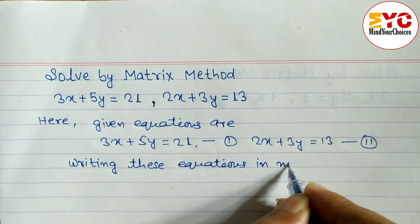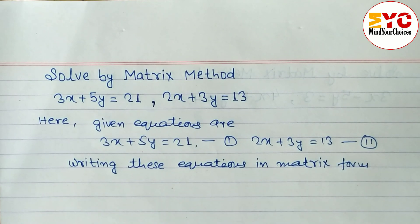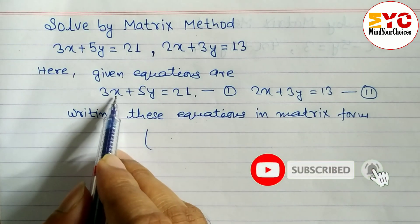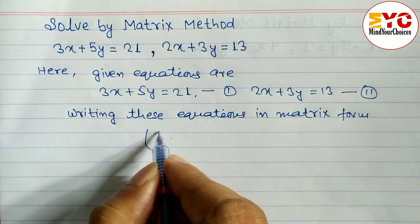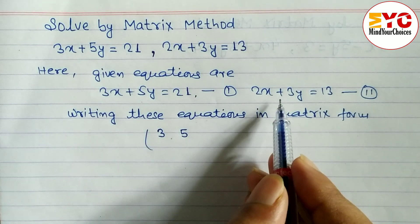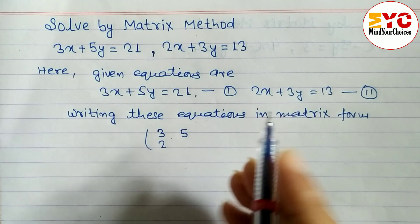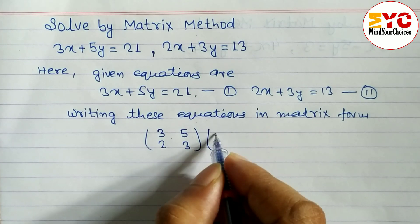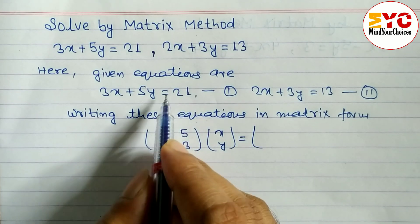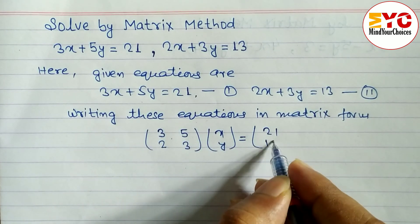To write the equations in matrix form, look at how to do it. The coefficient of x is 3, so we write 3; the coefficient of y is 5, so we write 5. For the second equation, coefficient of x is 2 and y is 3. Then we write x and y as a column, equal to 21 and 13.